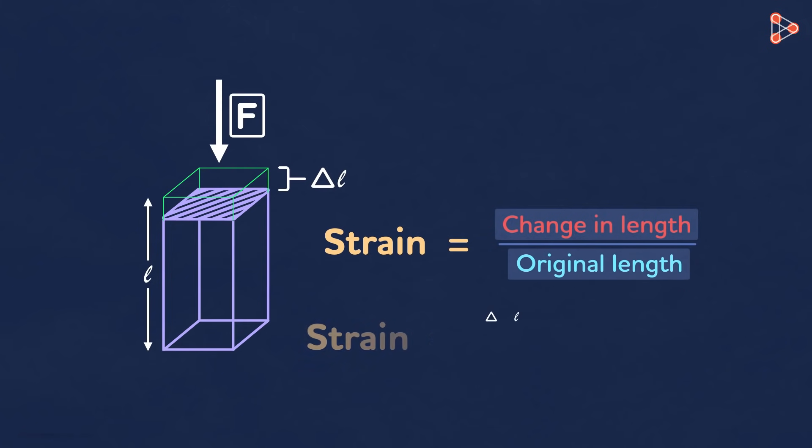Mathematically, it is delta L over L. So what does this ratio do? The ratio compares the change in length that resulted due to force with the original length of the beam. Here, strain is calculated in terms of length of the object.